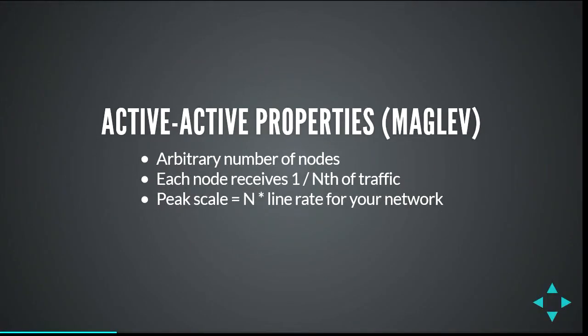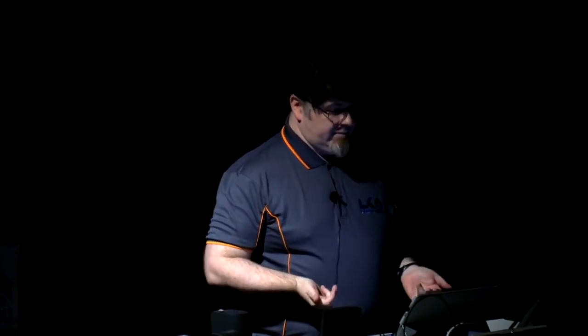Maglev nodes each receive one-nth of the traffic — your router is partitioning traffic among nodes using ECMP. If you've got 20 gig of traffic and 10 gig interface cards and two machines, they'll each get 10 gig. There's no cross-talk, no synchronisation, no need for nodes to know each other's health — there is no barrier to linear scaling. This applies whether you've got external traffic or traffic within your clusters.